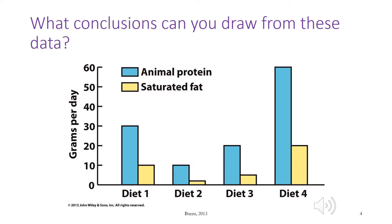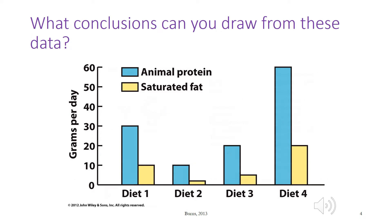Let's start building protein. Looking at this basic structure of an amino acid, what element is in proteins that is not in carbohydrates and lipids? What would make an amino acid essential?